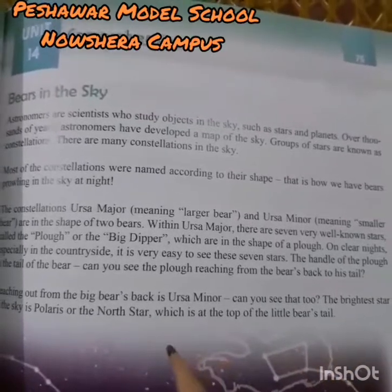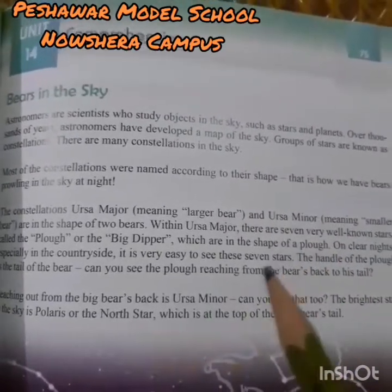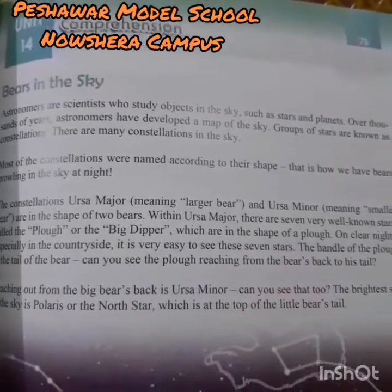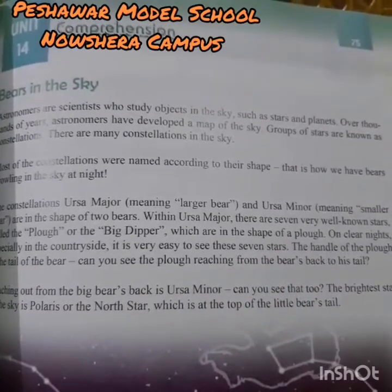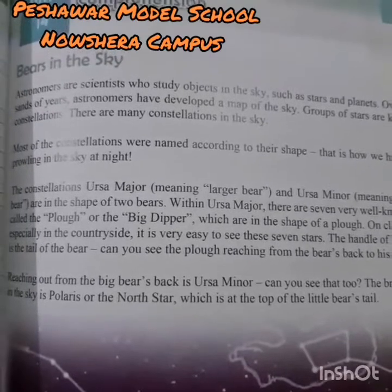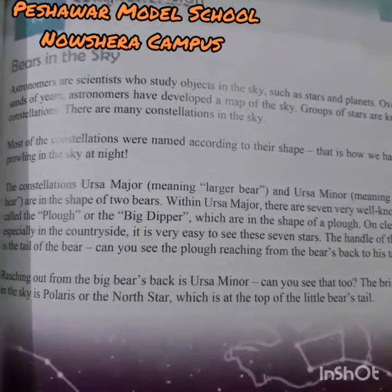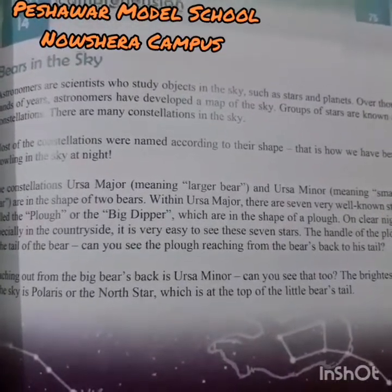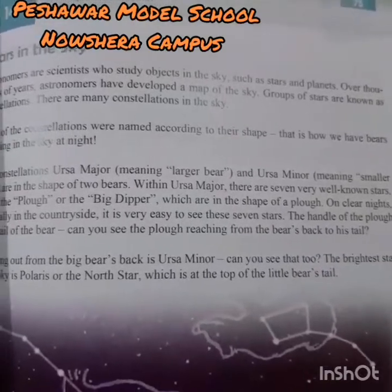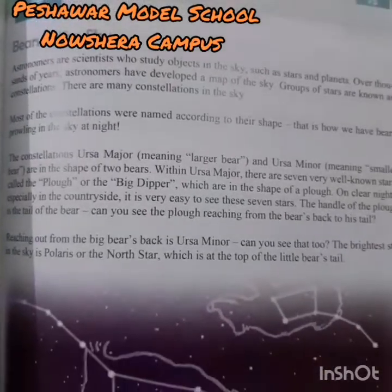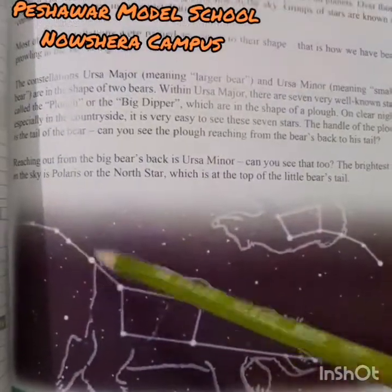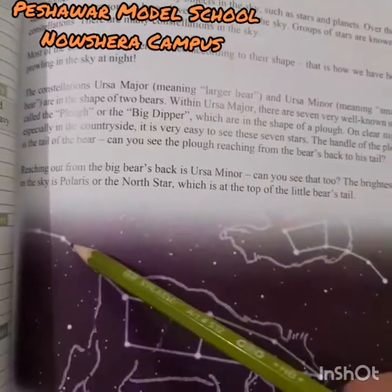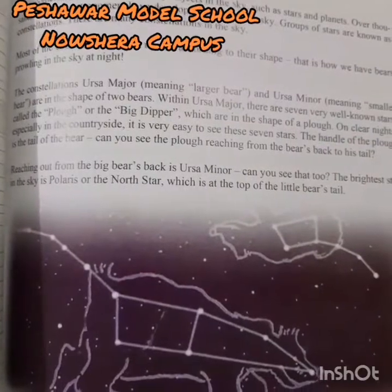Those seven stars are called the Plow or the Big Dipper, which are in the shape of a plow. On clear nights, especially in the countryside where the sky is open, you can easily see these seven stars. The handle of the plow is the tail of the bear — can you see the plow reaching from the bear's back to his tail? That is Ursa Major.